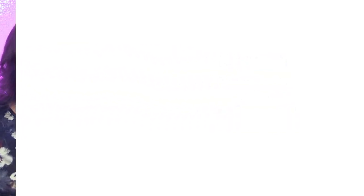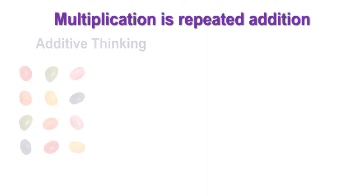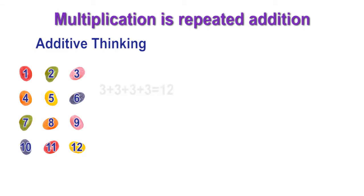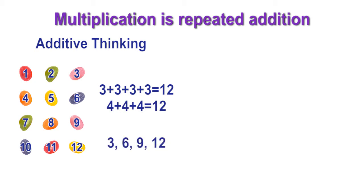In previous grades, we learned that multiplication can be thought of as repeated addition. Many students in lower grades would use counting, addition, or skip counting to determine the number of beans in this graphic. They could simply count the beans, add 3 four times, add 4 three times, or skip count to produce a correct answer.